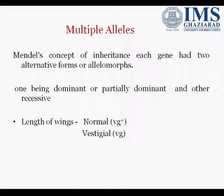As per Mendelian inheritance, each gene has two alternative forms. Among these two forms, one will be the dominant or partially dominant, and the other will be the recessive one. The dominant form is termed the wild type, and the recessive one is called the mutant.